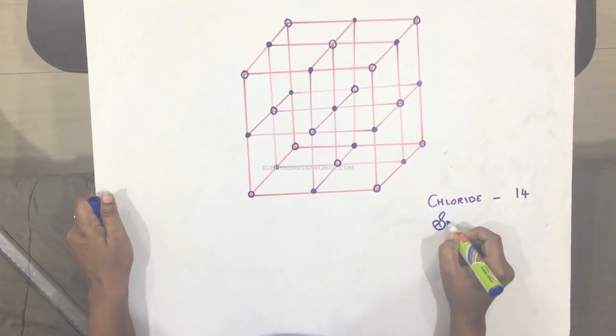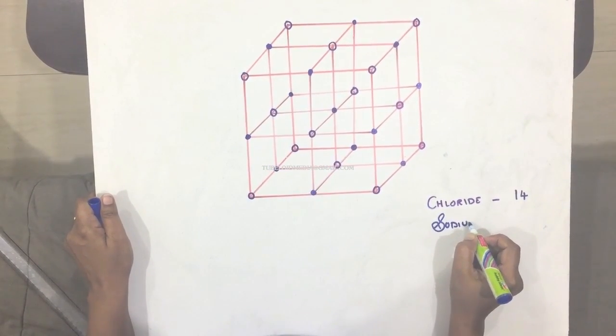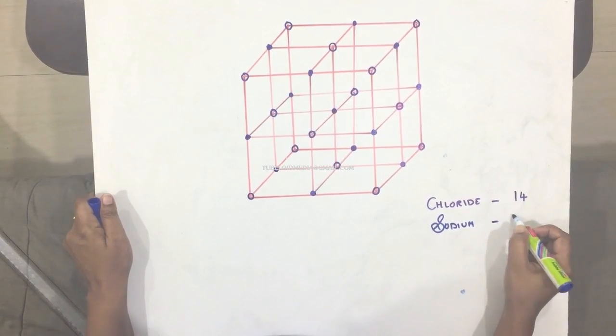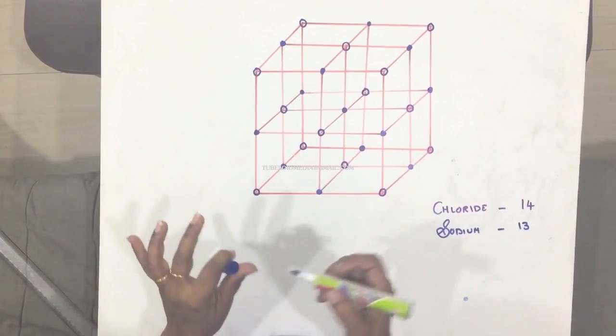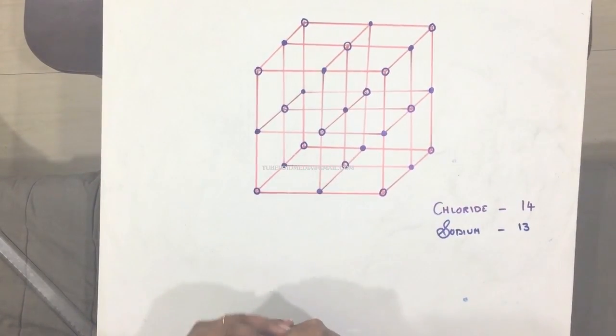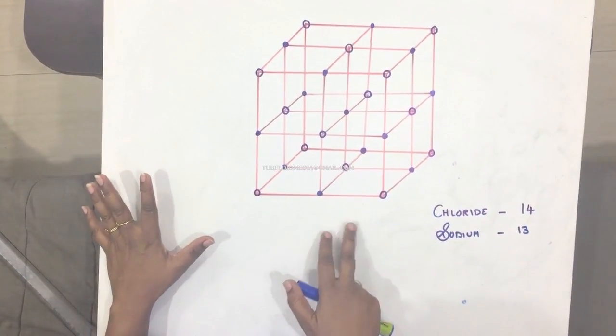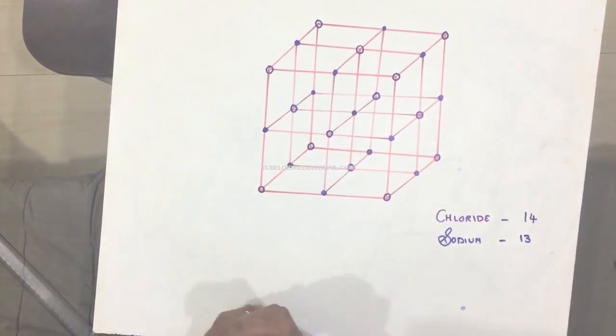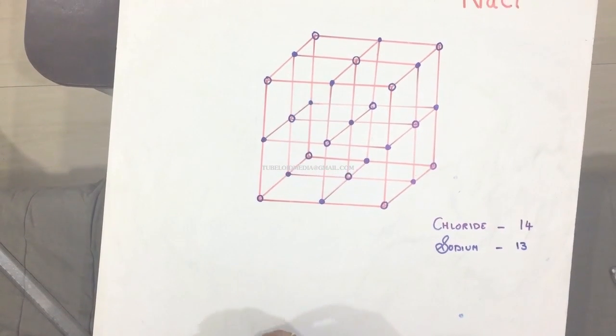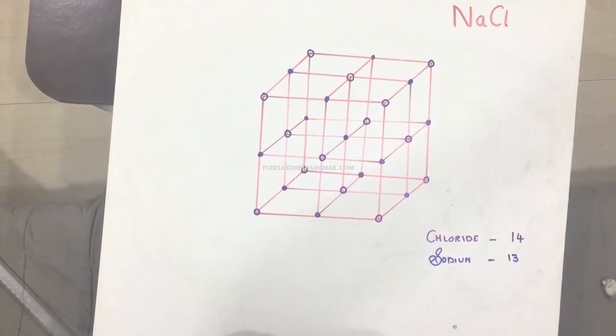So sodium we have thirteen ions. So we have drawn the structure of sodium chloride in a very easy way. And also marked the ions. So I hope this will be very easy for you. So you can try and just let me know whether it's.